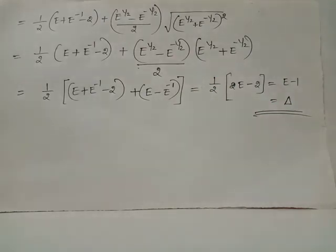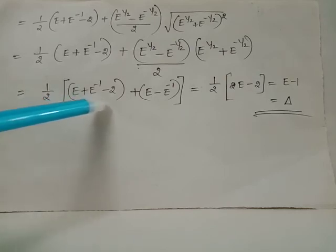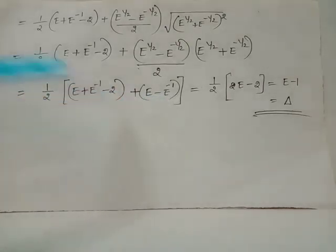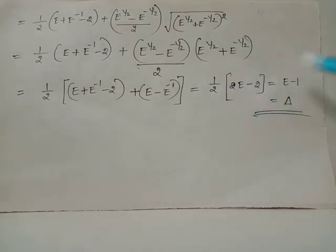One-half is common to both terms, so it can be taken as a common factor outside both terms. Inside the square bracket we have the simplification: (e plus e-inverse minus 2) plus (e minus e-inverse). The e-inverse and negative e-inverse terms cancel, leaving 2e minus 2 inside the square bracket. When 1/2 is multiplied to both terms it becomes e minus 1. Since e minus 1 equals the forward difference operator Delta, we have proved the result.